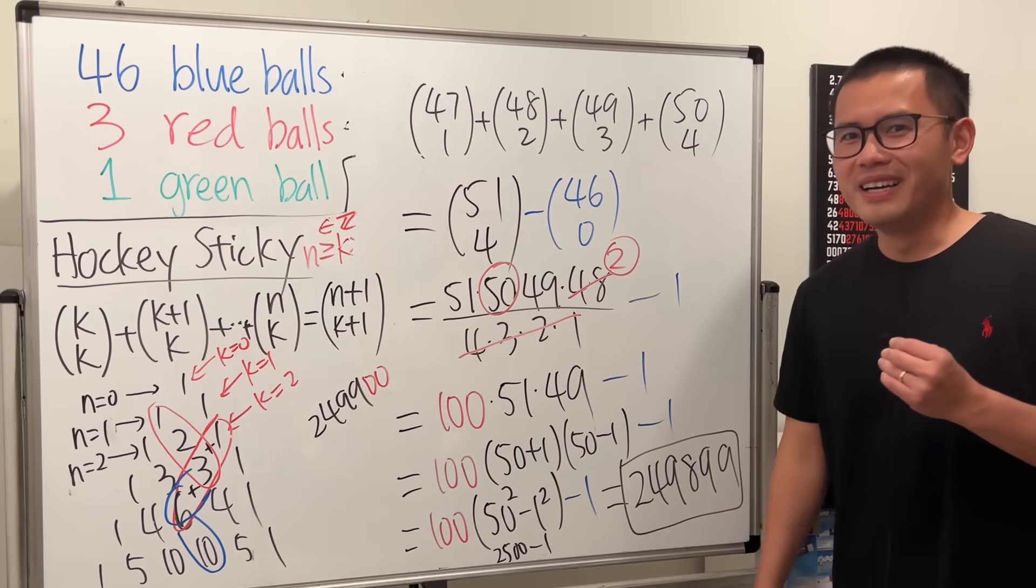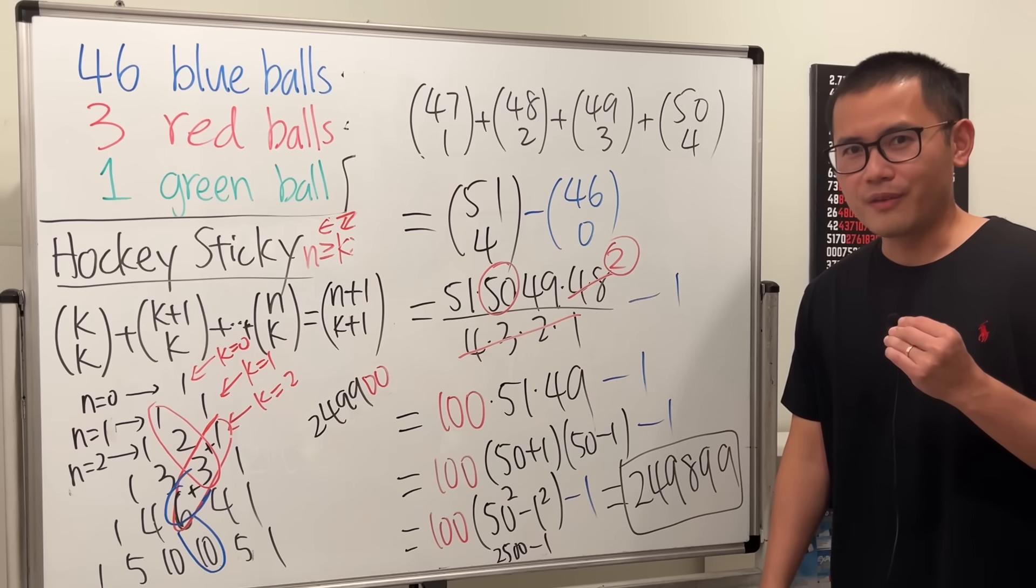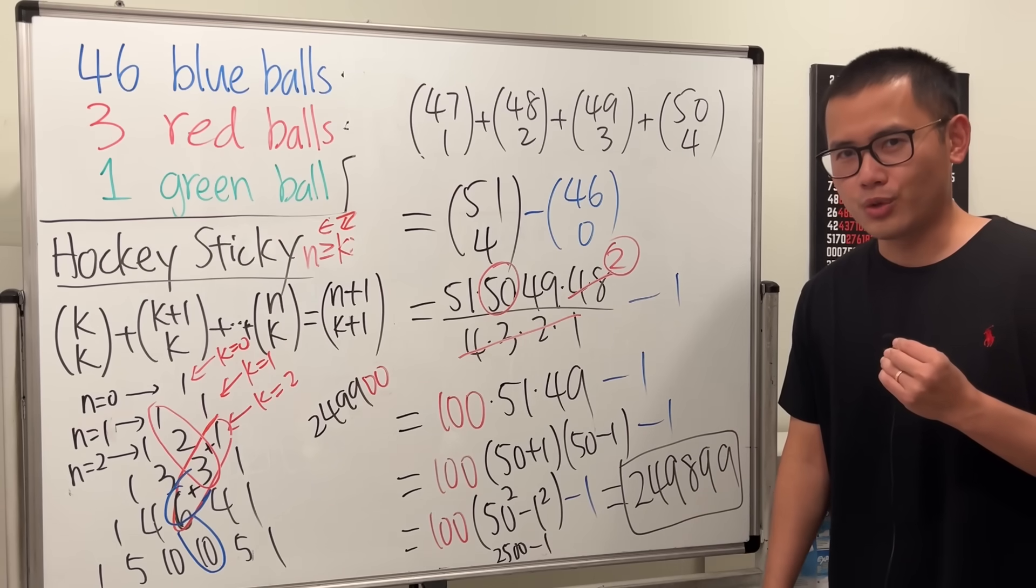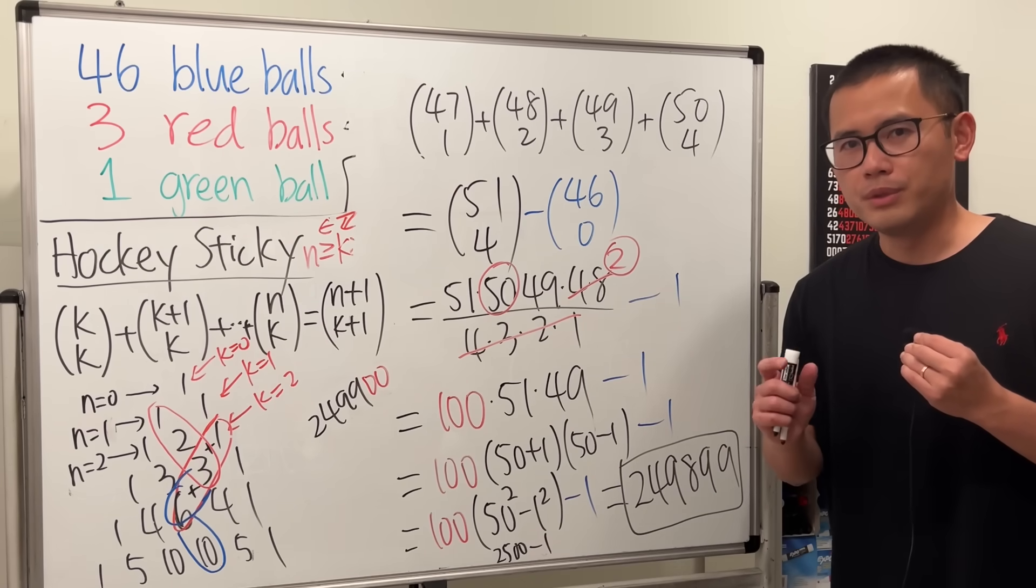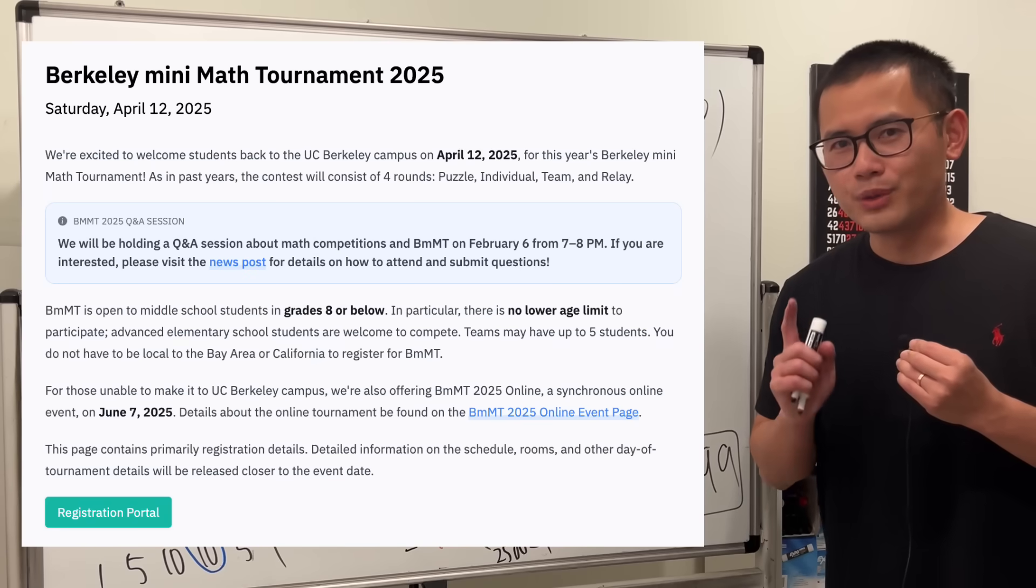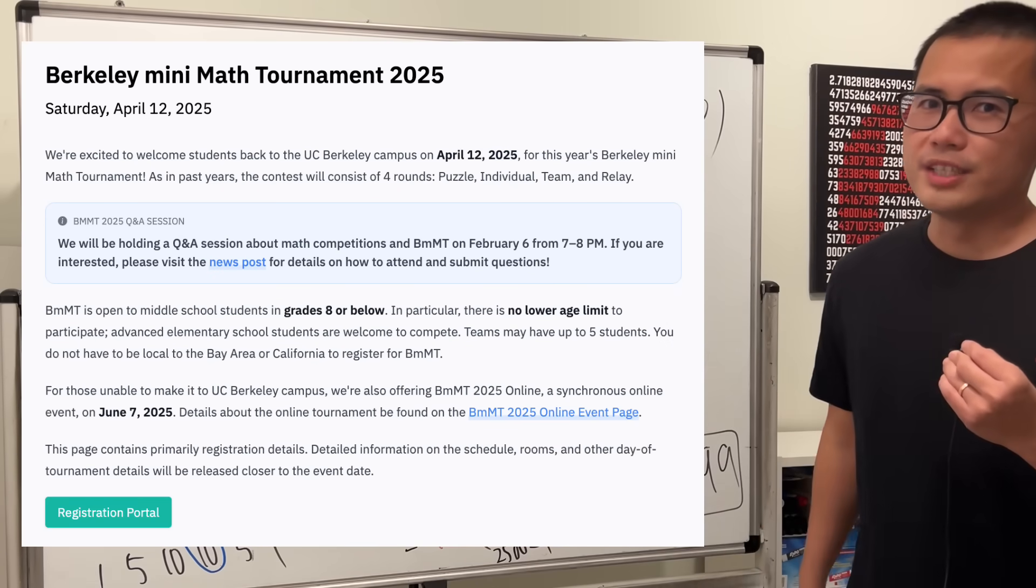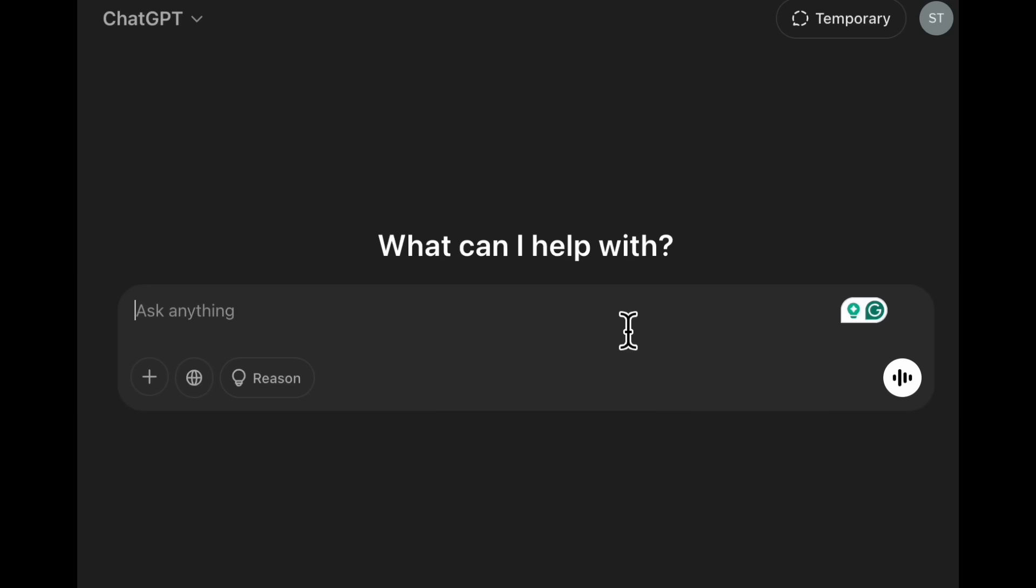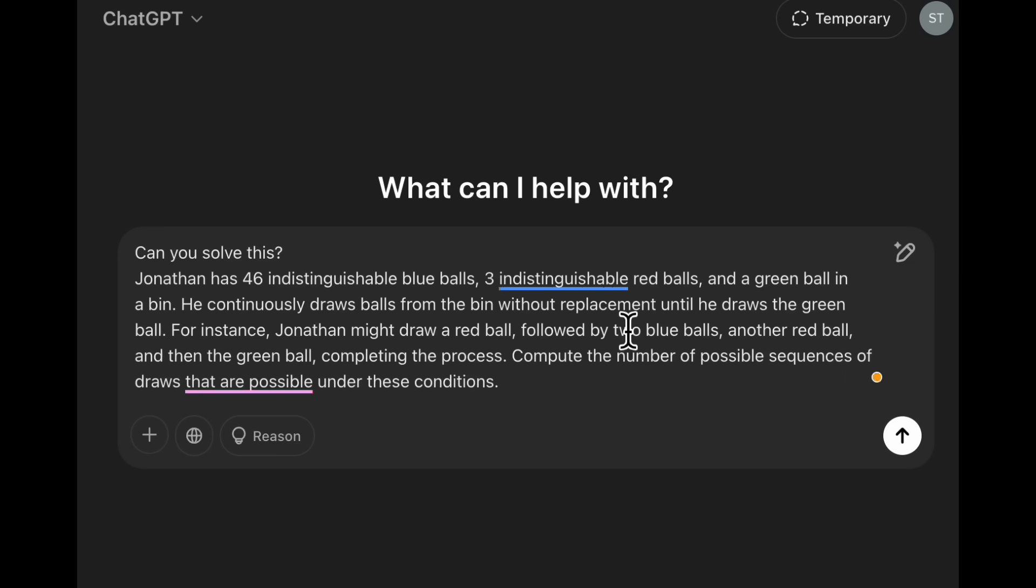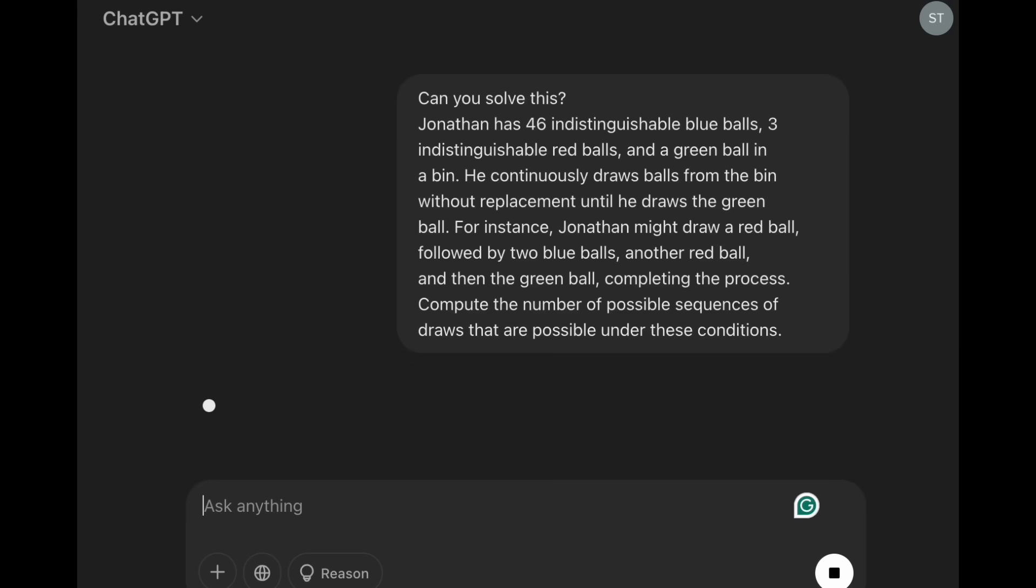And this is the last question of the individual run of the Berkeley math mini tournament for middle school students. If you want to participate this year, it's going to be April 12th. Link will be in the description for you to check it out. Thank you.